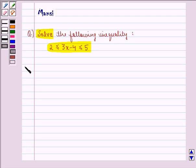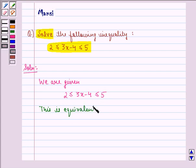Let us start with the solution. We are given 2 is less than or equal to 3x minus 4 is less than or equal to 5. This is equivalent to two inequalities.